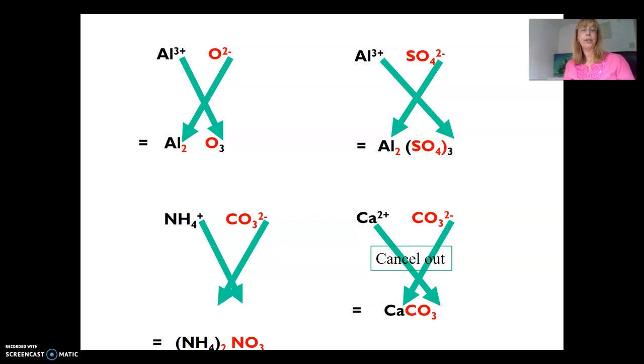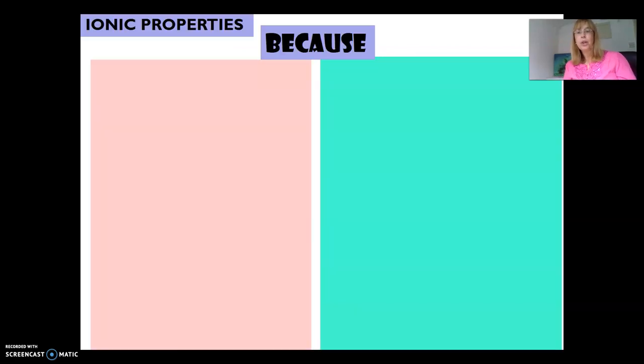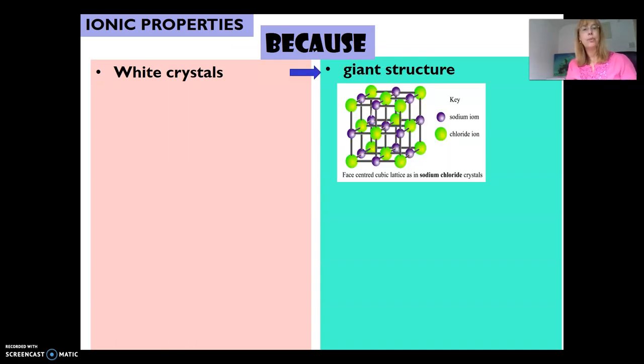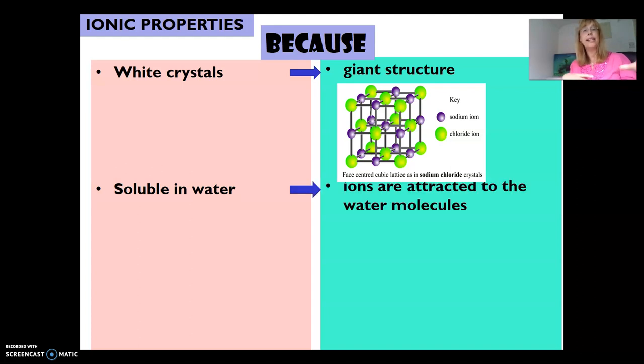Now we look at the properties. Why do they have white crystals? They have white crystals because they form a giant structure where all these positive and negative ions are attracted to each other. It's soluble in water because these positive and negative ions get attracted to the water molecules.